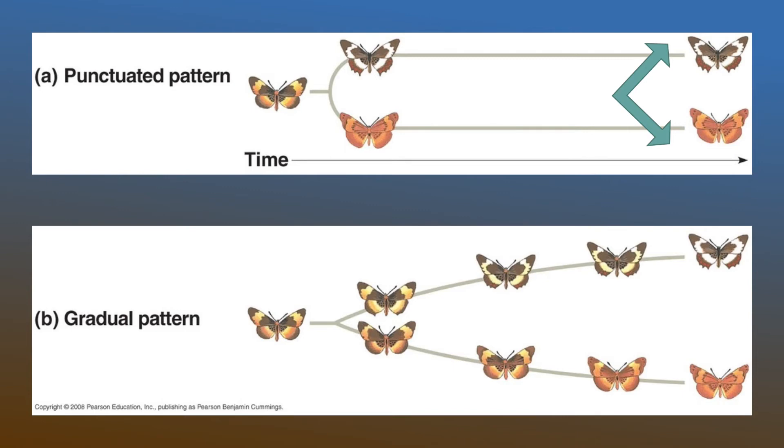Nothing really changes, the color remains the same. So this supports the idea that with punctuated equilibria, sudden change will occur and then after that no real change will happen.